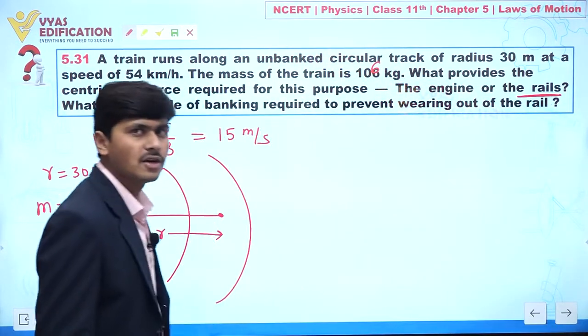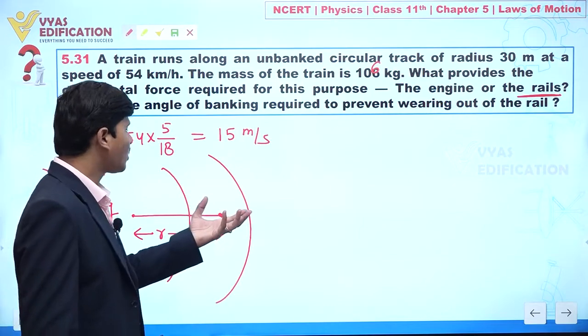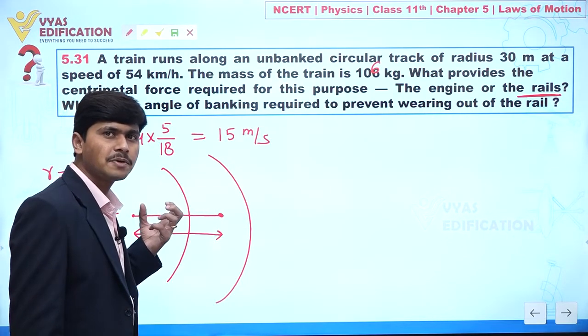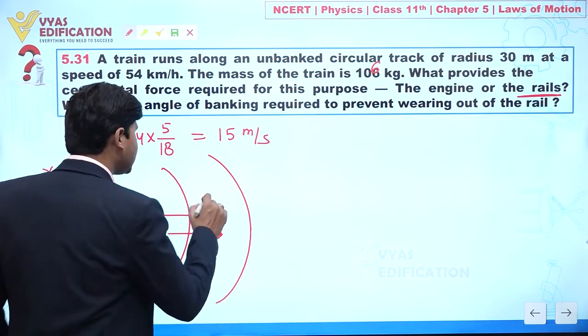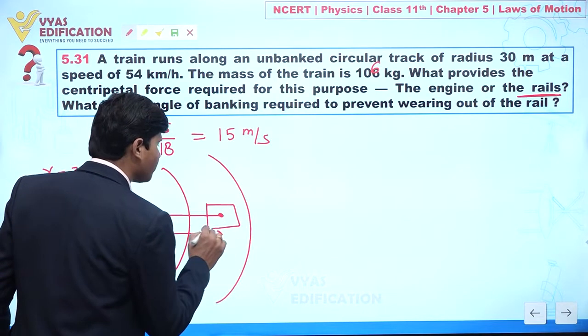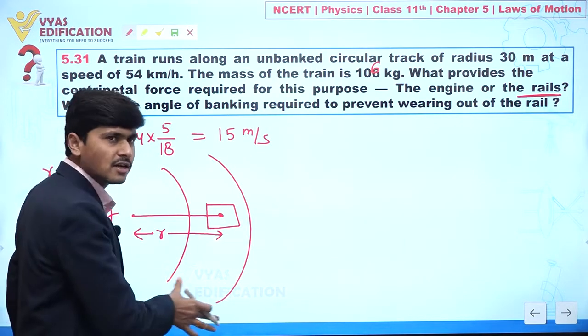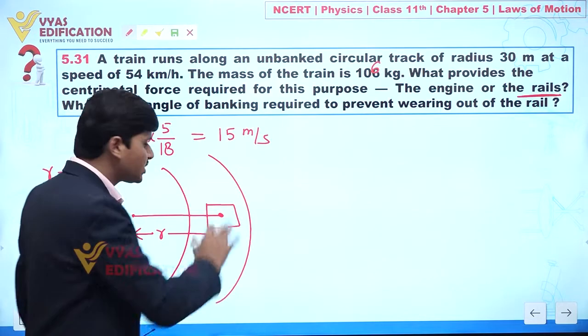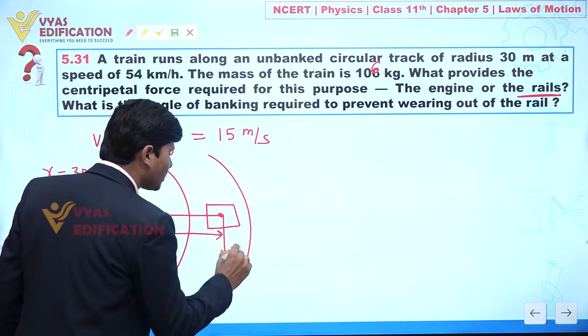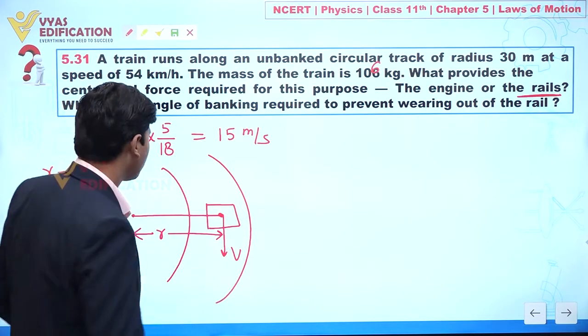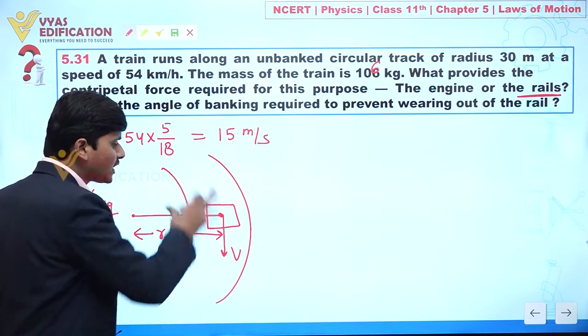If we talk about the necessary centripetal force, let us suppose I am assuming here we have a train. Definitely this is a rail. So let us suppose we have a train. This train is having uniform circular motion.